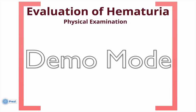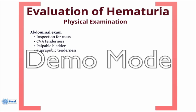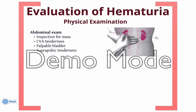After a history, the next step in evaluation would be a focused physical examination. One should examine the abdomen, specifically looking for any renal mass or abdominal mass, and significant costovertebral angle tenderness, which can indicate renal obstruction. One should also examine the lower abdomen to see if the bladder is palpable or if there is any significant suprapubic tenderness. Also examine the external genitalia, look for any abnormalities of the urethral meatus, any induration along the course of the urethra, and examine the scrotum for any significant intrascrotal pathology.